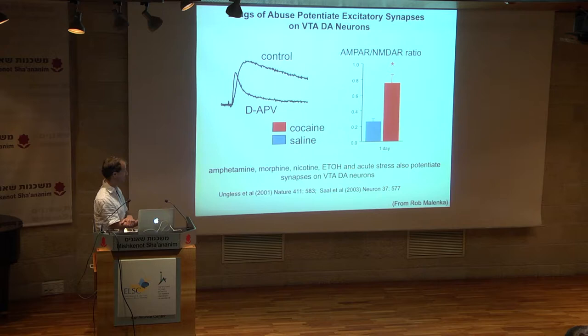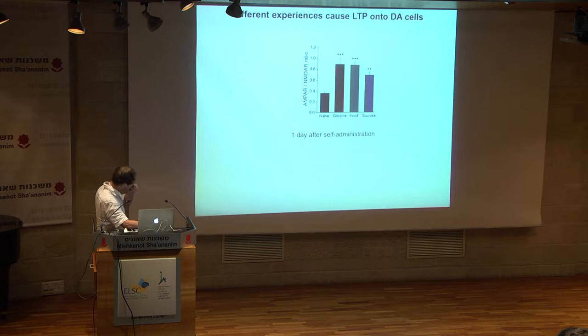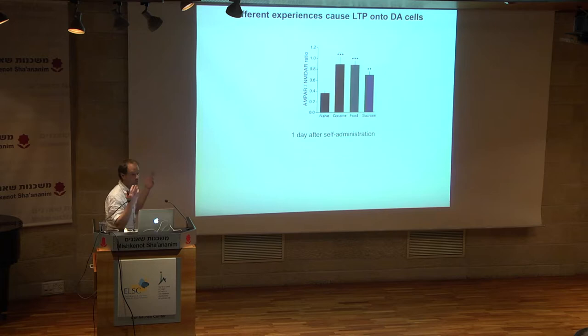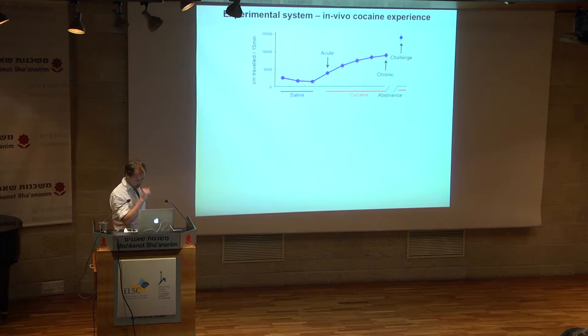When they looked further, they saw that amphetamine, morphine, nicotine, ethanol, and other experiences such as acute stress also potentiate synapses onto VTA dopamine neurons. Christian Lucher has contributed enormously to decoding synaptic modifications in the nucleus accumbens. Cocaine, food, and sucrose all cause an increase in the AMPA to NMDA ratio onto dopamine neurons in the VTA. So this is a unidimensional parameter that encodes an experience, but we cannot differentiate between these different experiences—from our experimental perspective, they look identical.